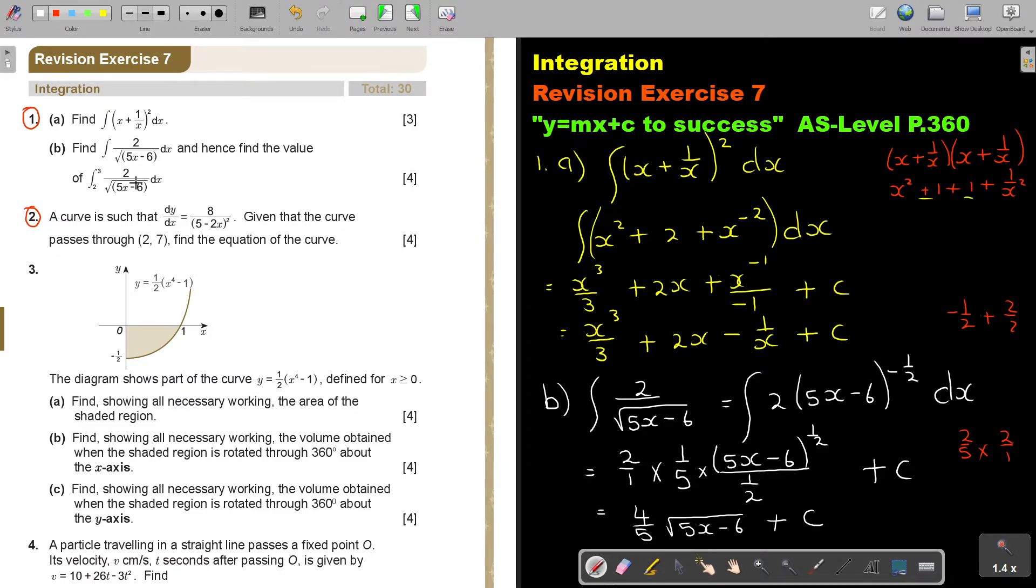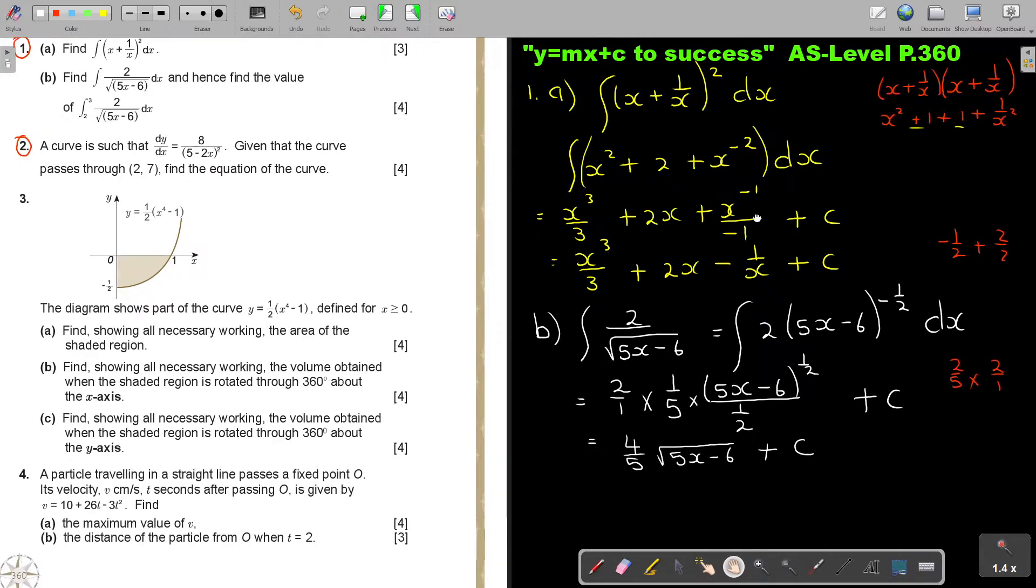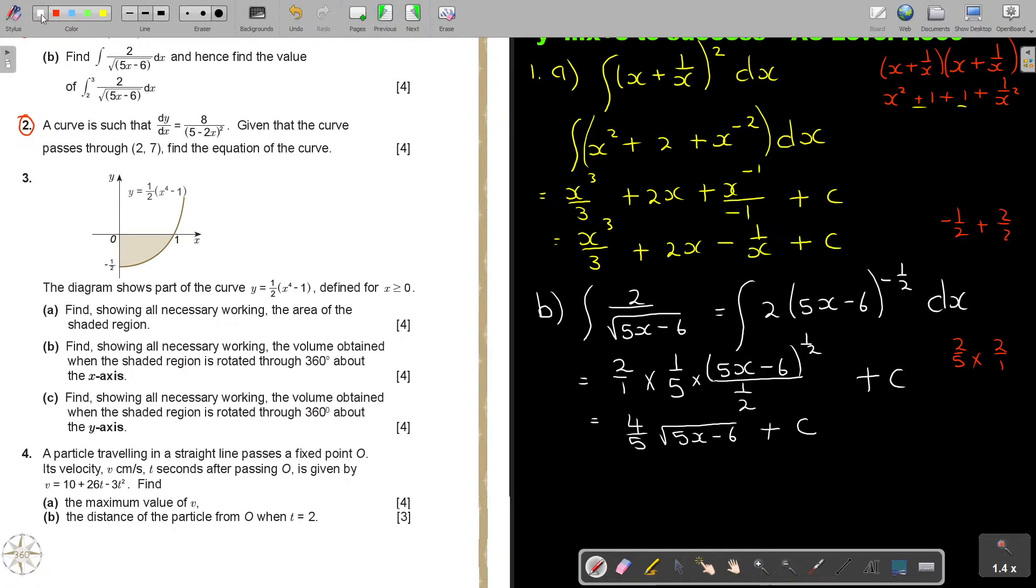Now, usually they could have made it i and ii, but they did not. So don't stop there. Hence, find the value. So now they say we're going to go a little bit further. And then it's going to be 3 and 2. And it's still the same. But I know already, and I can go directly into this step. I know already that it's going to be 4 over 5 root(5x minus 6). And because it's definite, I don't have to write the plus C minus C. It will cancel out. 3 and 2.